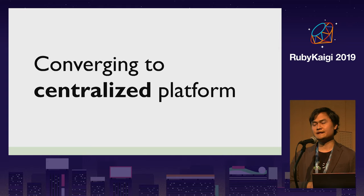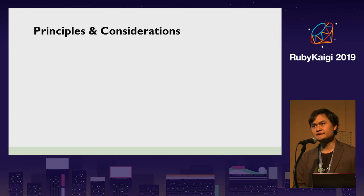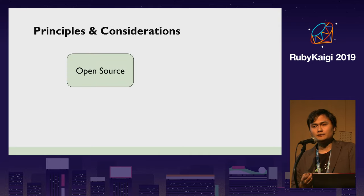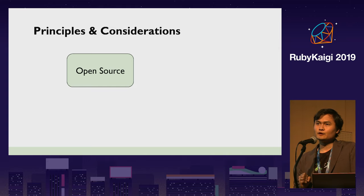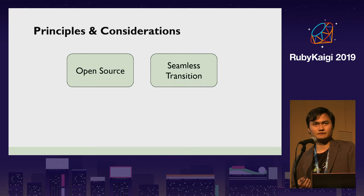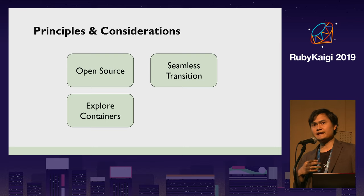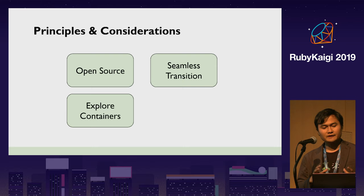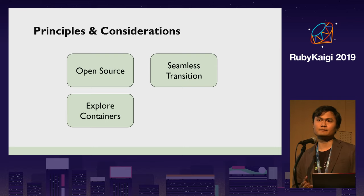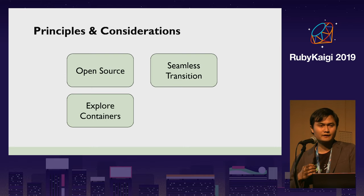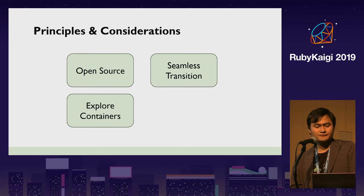There are a couple of principles and considerations for this project. The first is open source — we decided to use existing open source projects or contribute to them, so almost everything we created is open source. We also want it to be seamless; we already have a lot of services in production and don't want anything to break during the transition. At that time we were still mostly using VMs, and we were thinking about starting to explore containers — but moving is not trivial because we already have several thousands VMs in production.